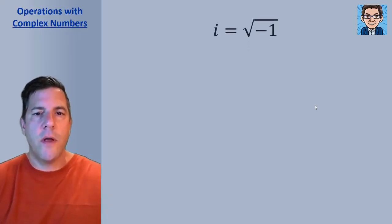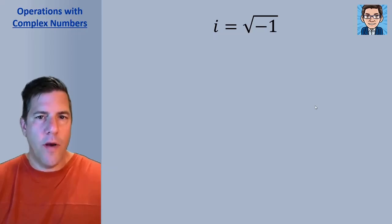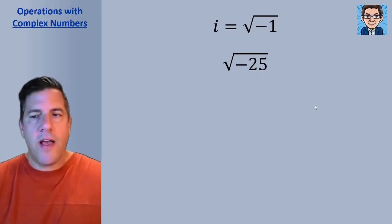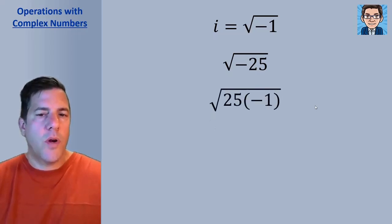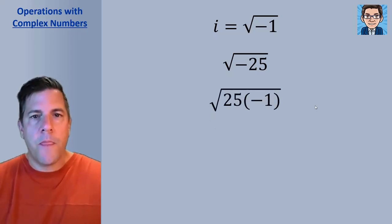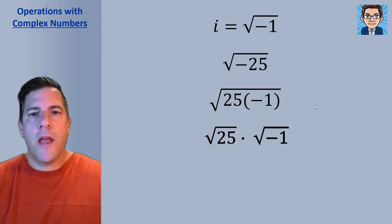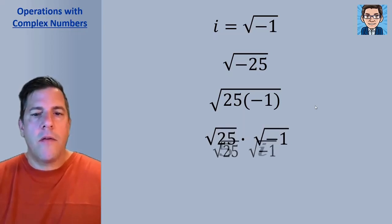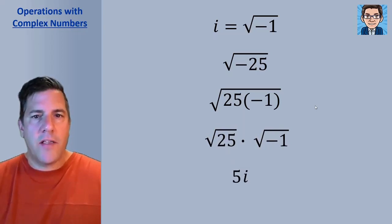i is defined as the square root of negative 1, with i standing for imaginary. What that allows us to do is take the square root of something like negative 25. We can split negative 25 into 25 and negative 1, then into the square root of 25 and the square root of negative 1. The square root of 25 is 5, and the square root of negative 1 is i, so the answer becomes 5i. This allows us to take the square root of a negative number.